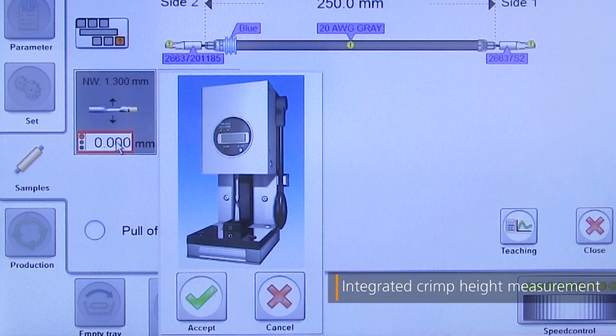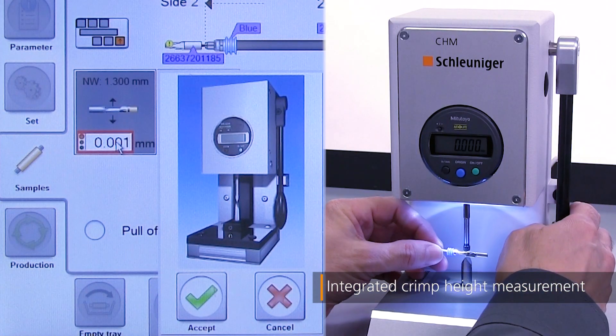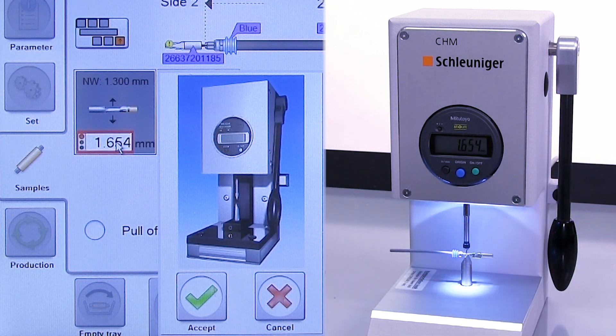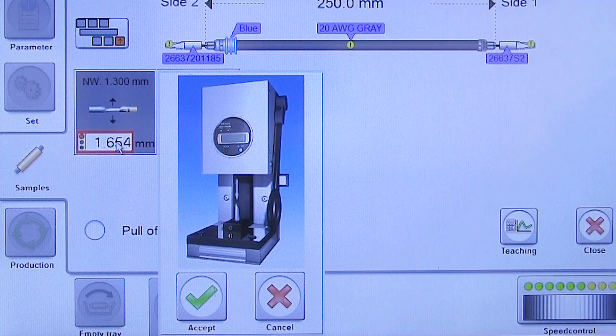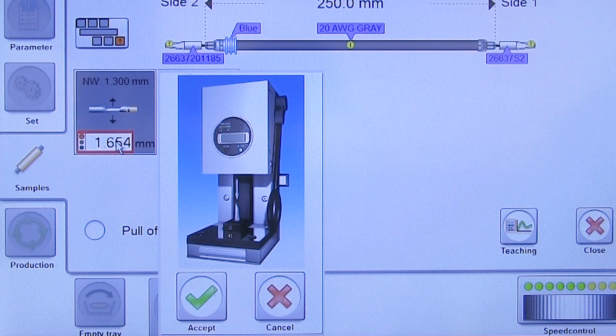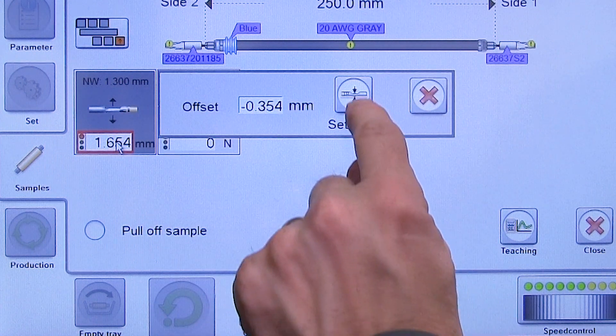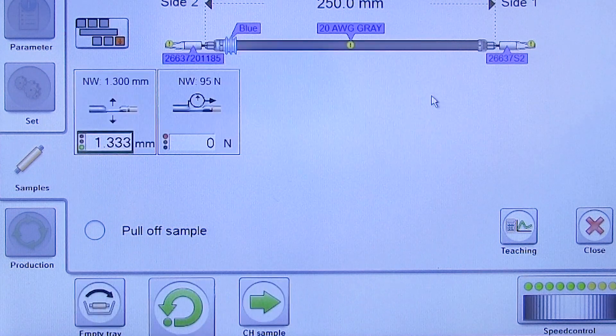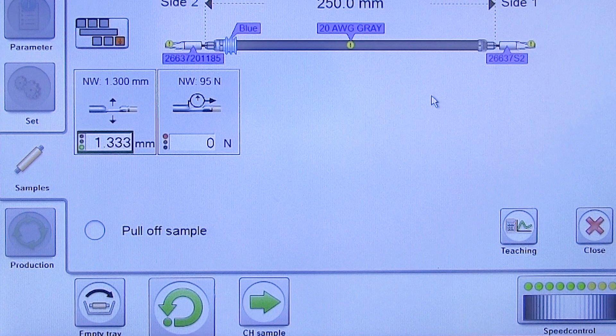The optional Crimp Height Measurement System, or CHM, is an integrated measuring device and automatically transmits the measured crimp height values to the EZ software. In case of deviation from the nominal value, the crimp height can be adjusted with the touch of a single button and the correction is applied to the subsequent production.